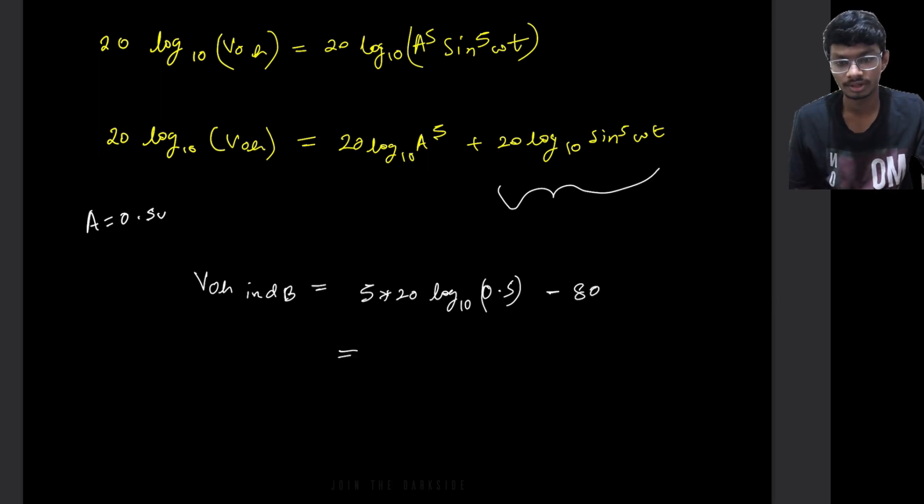minus 80. So this will come out to be around minus 30 dBs. So this is minus 30, this is minus 80. So this will be around minus 110 dBs. Now we have got the amplifier output.